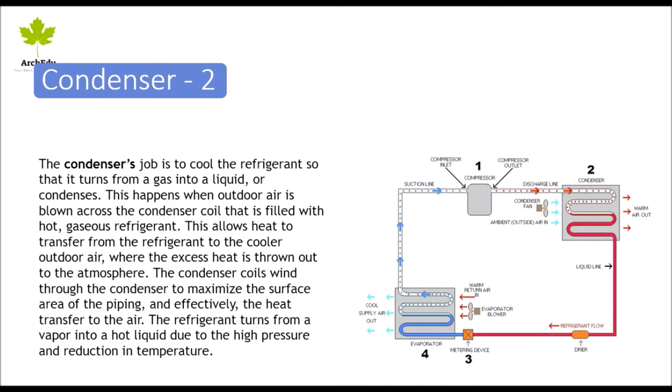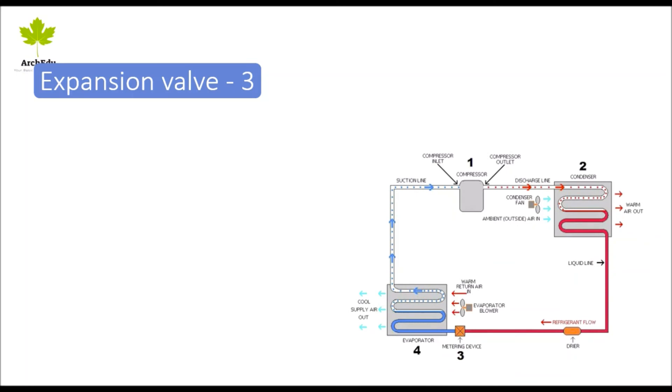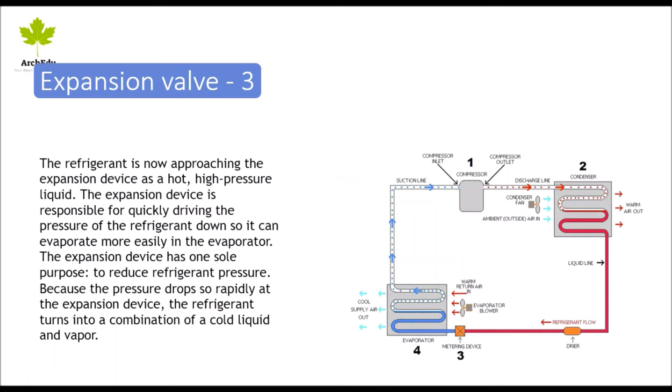Third part: the expansion valve. The refrigerant is now approaching the expansion device as a hot, high-pressure liquid. The expansion device is responsible for quickly driving the pressure of the refrigerant down so it can evaporate more easily in the evaporator. The expansion device has one sole purpose: to reduce refrigerant pressure.